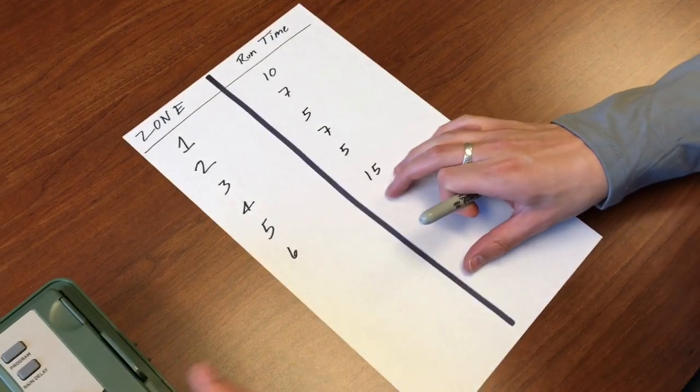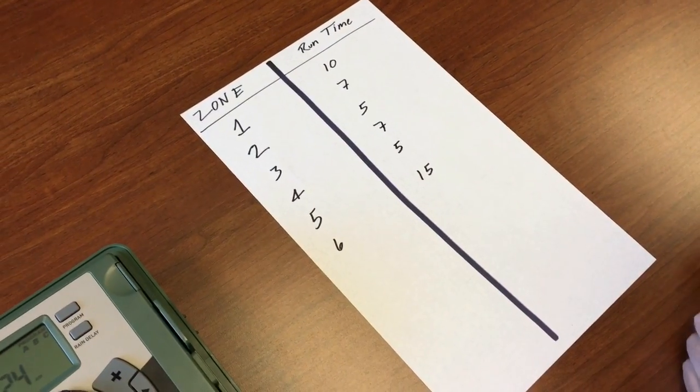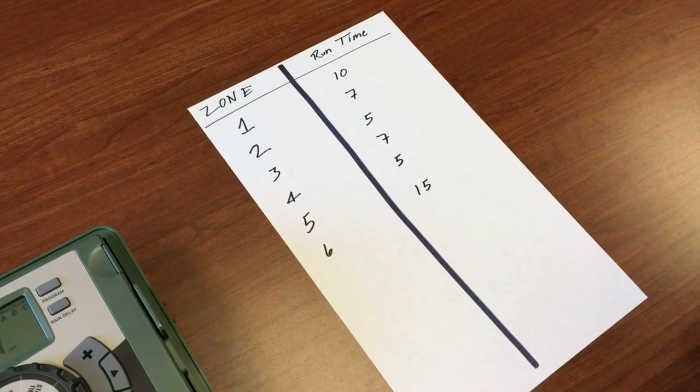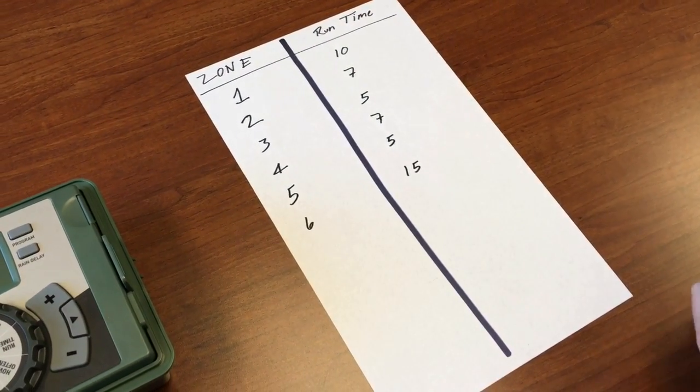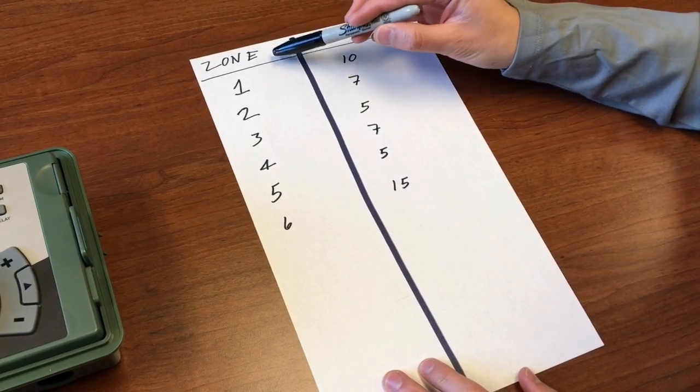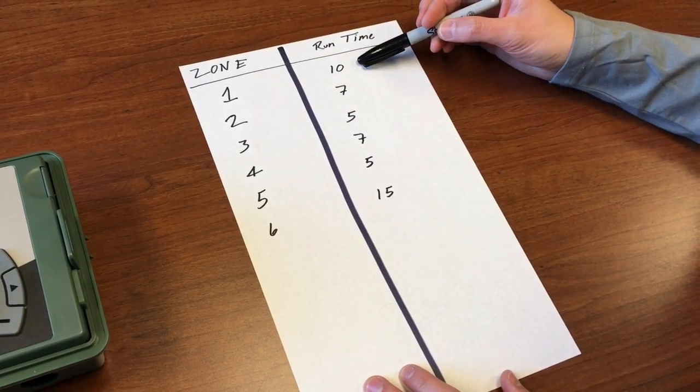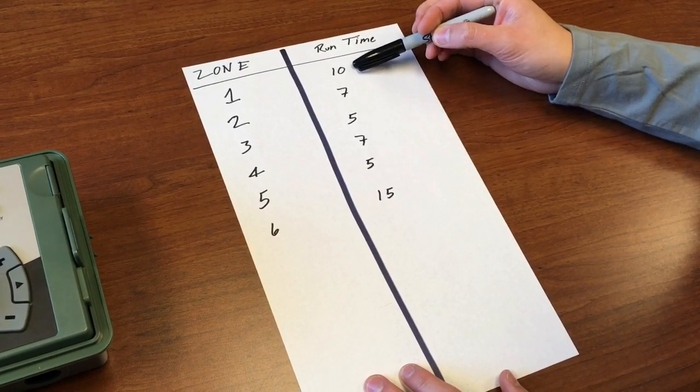This is a six station timer and so I've got written out an example of a yard that has different watering needs. Here we have in the left hand column the different zones and then here in the right hand column we have the runtime that we need them to run.